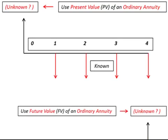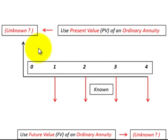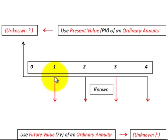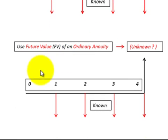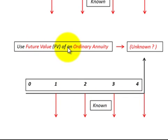Here we have an unknown present value and known equal payments — an annuity — with four payments received at the end of the period. That would be the present value of an ordinary annuity. Here we have an unknown future value with equal payments also received at the end of the period, so we'd use the future value of an ordinary annuity table or formula.